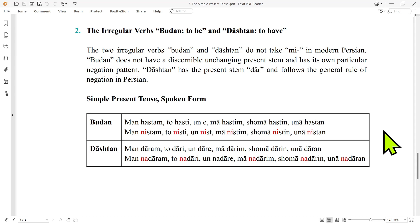And for the negative forms, we have man nistam, to nisti, un nist, ma nistim, shoma nistin, and una nistan.